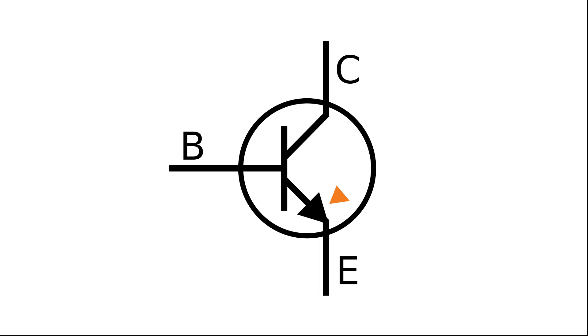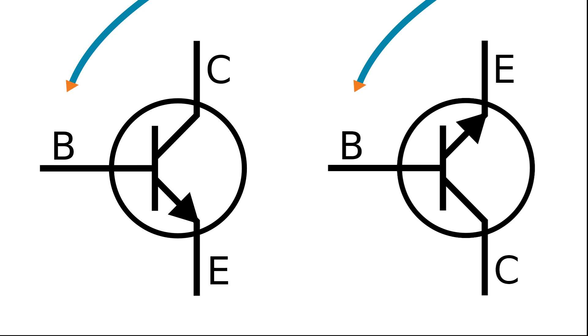Compare this to an NPN transistor symbol. Notice, there is one arrow pointing out towards one of the N-type layers. We know that the middle layer is always the base, but the emitter and collector can appear on either side of the symbol. On the circuit symbol, the arrow is always on the emitter, so we can tell which lead is the emitter and which is the collector by seeing which one has the arrow.